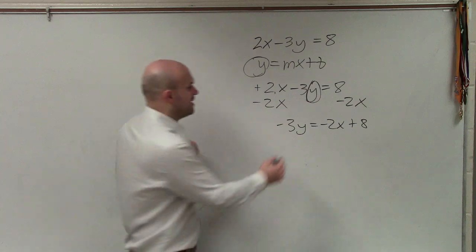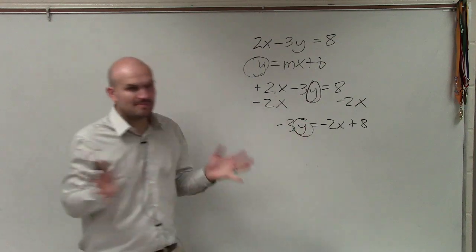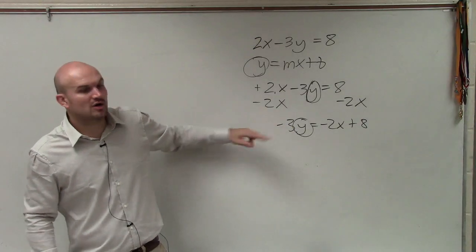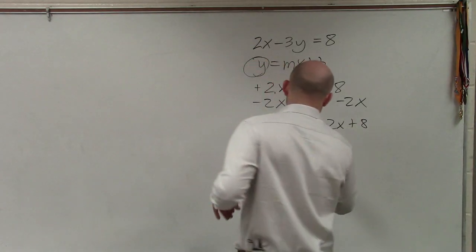Now to solve for my y, again, I like to circle it because I'm not doing anything to the y. I'm just undoing everything that's happening to it. Now you can see my y is being multiplied by negative 3. So I divide by negative 3.